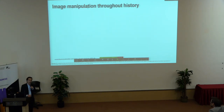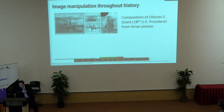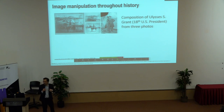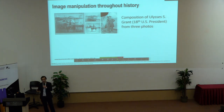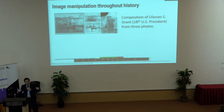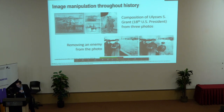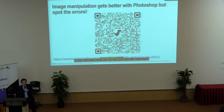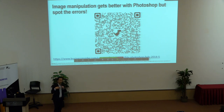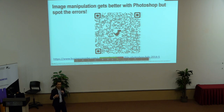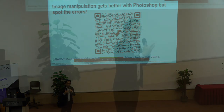Image manipulation has always occurred throughout history. We have a few notable examples — for example, the composition of the 18th US president using three different photos combined into one, to portray himself in a much greater light. It can also be used differently: if you don't like someone, you can erase the person from the photograph. And in today's world, we have Photoshop. A lot of you have used Photoshop before — a little bit of touch-up. This shows that Photoshop has been used to manipulate and enhance images as well.